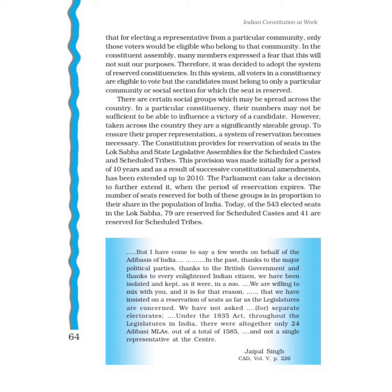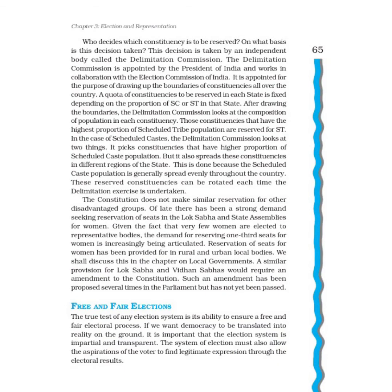The number of seats reserved for both of these groups is in proportion to their share in the population of India. Of the 543 elected seats in the Lok Sabha, 84 are reserved for Scheduled Castes and 47 are reserved for Scheduled Tribes, as of September 2012. In dono groups — SCs aur STs — ka jo reservation seats hain, unka wahi proportion hai jo India ki population mein inaka proportion hai.